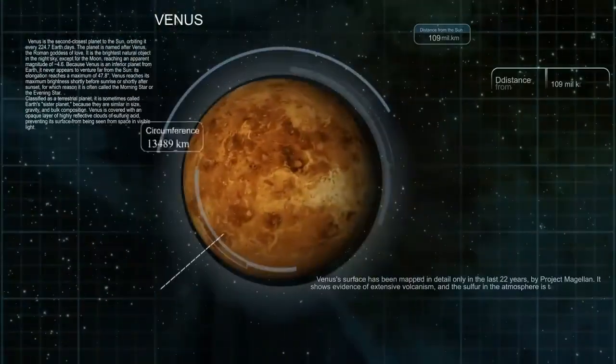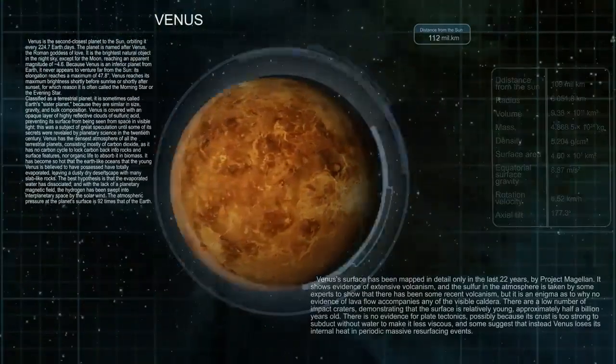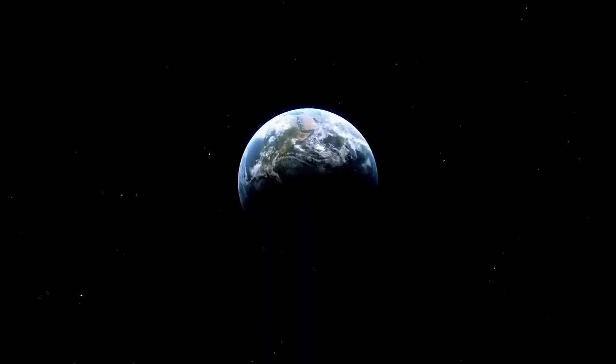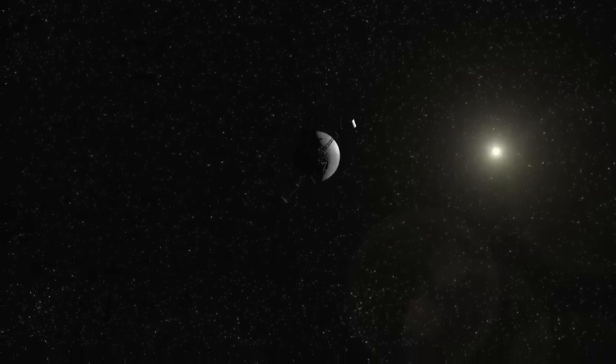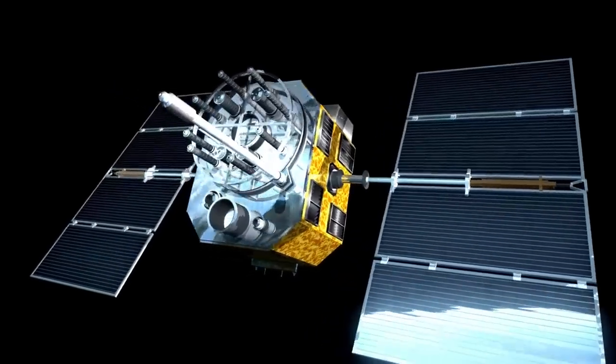Voyager's own internal systems began to behave unpredictably as well, though not in the ways typical of equipment failure. Its orientation sensors, normally used to determine its position relative to distant stars, began producing contradictory data.